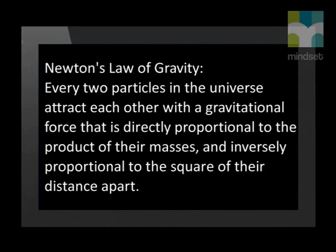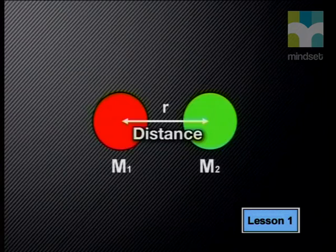Every two particles in the universe attract each other with a gravitational force that is directly proportional to the product of their masses and inversely proportional to the square of their distance apart. This is quite a long statement and it contains some very powerful ideas. Firstly, it states that every two particles in the universe attract each other. The word 'particles' here refers to even the smallest speck of matter which has mass, but of course the law applies to all matter.